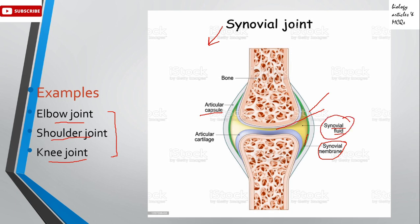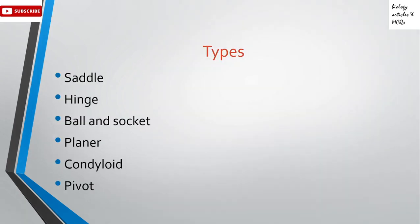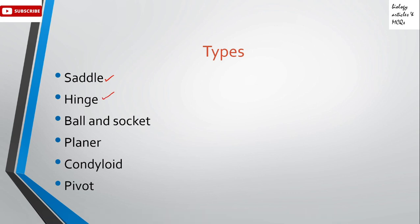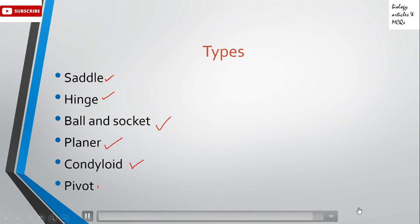The synovial joint has many types. The first one is the saddle joint, the second is the hinge joint, the third is the ball and socket joint, the fourth is the planar joint, then the condyloid joint, and last is the pivot joint. All these six joints differ on the basis of their structure.